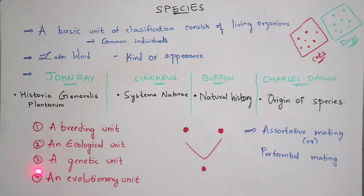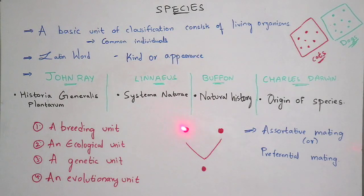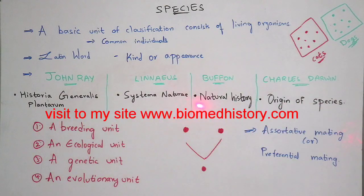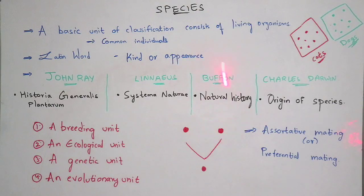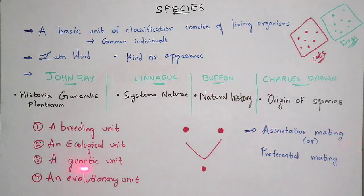Coming to the genetic unit — it is nothing but that individuals receive or share the same type of karyotype. For example, if you take a dog, when this dog will mate with another dog which belongs to the similar species, then it mainly forms a fertile individual. So genetic unit means it shares similarity in the karyotype.